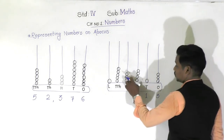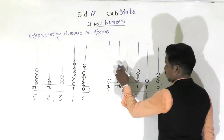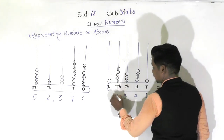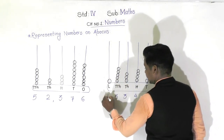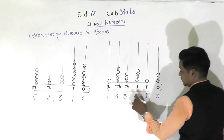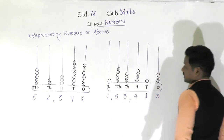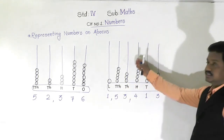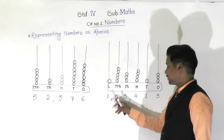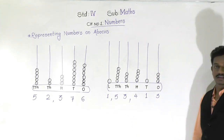Then one, two, three - digit 3. Then one, two, three, four, five - digit 5. And here one bead - digit 1. So the places are ones, tens, hundreds, thousands, ten thousands, and lakhs. This abacus represents the number 1,53,345 - understood?